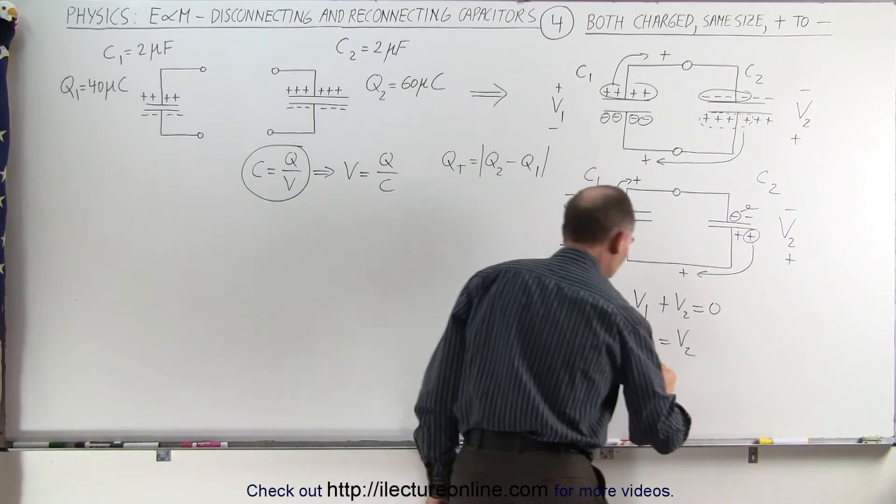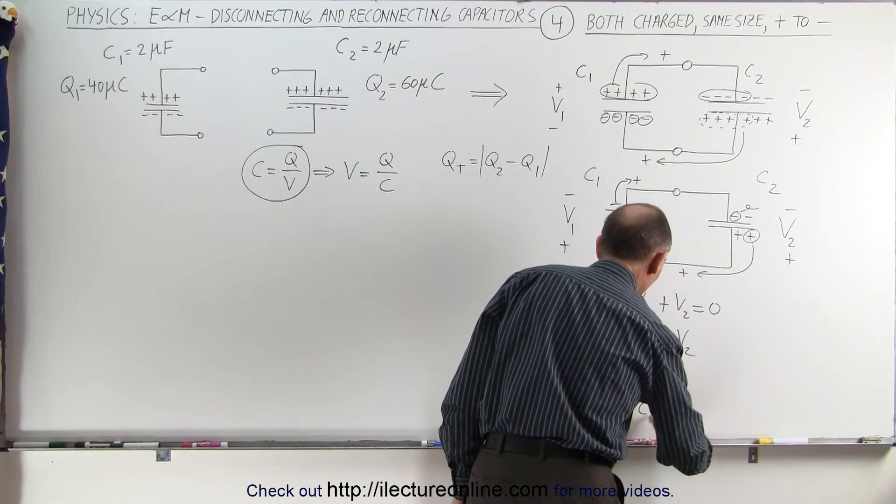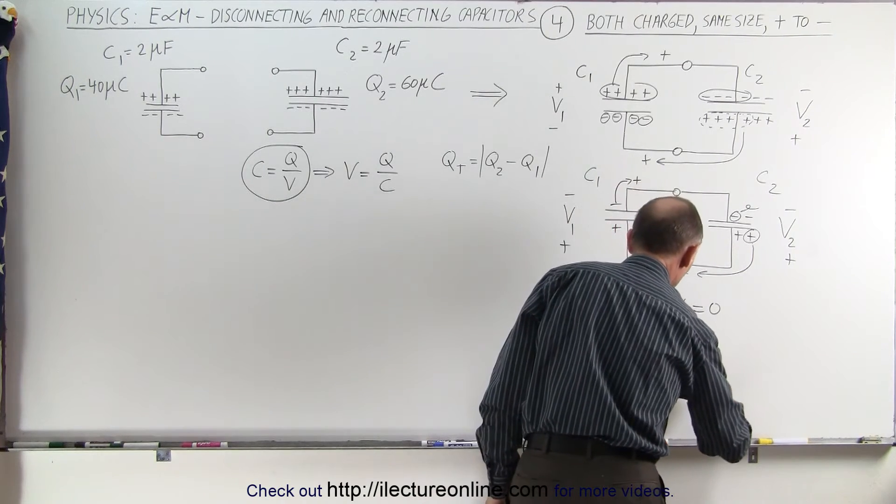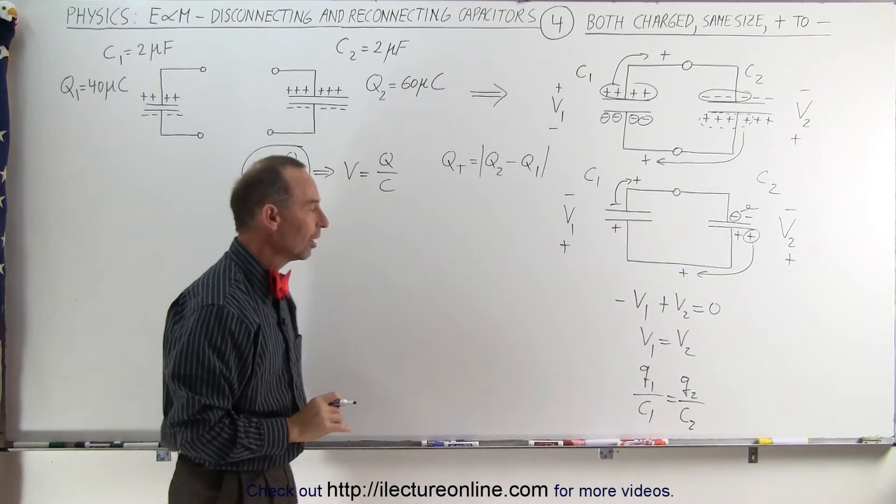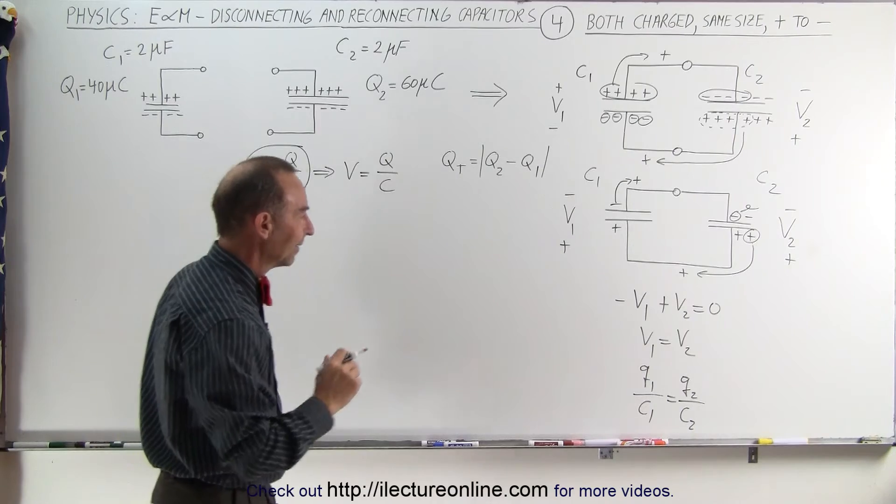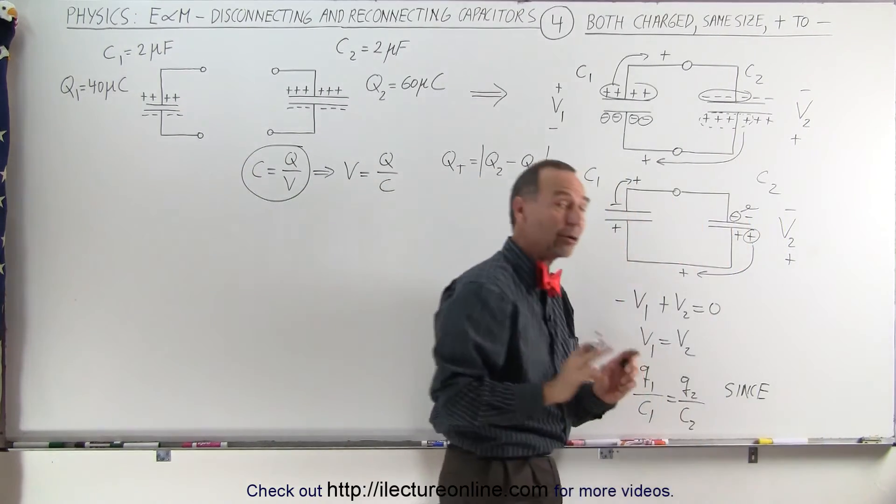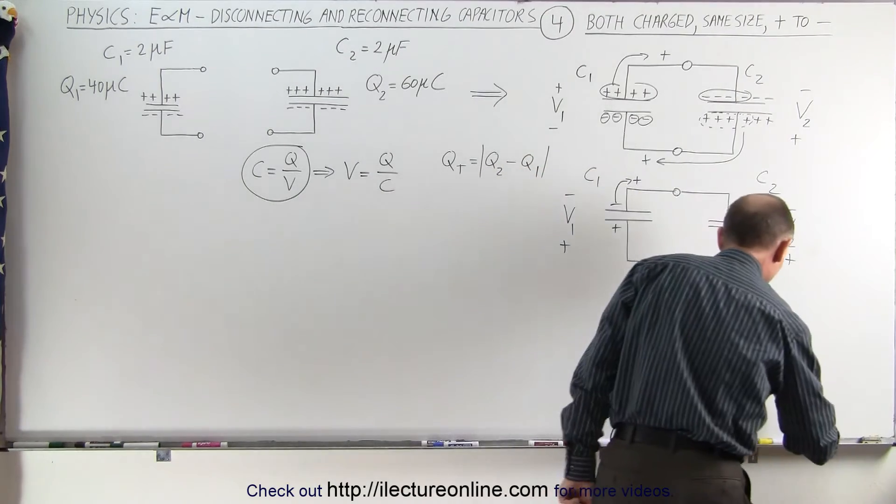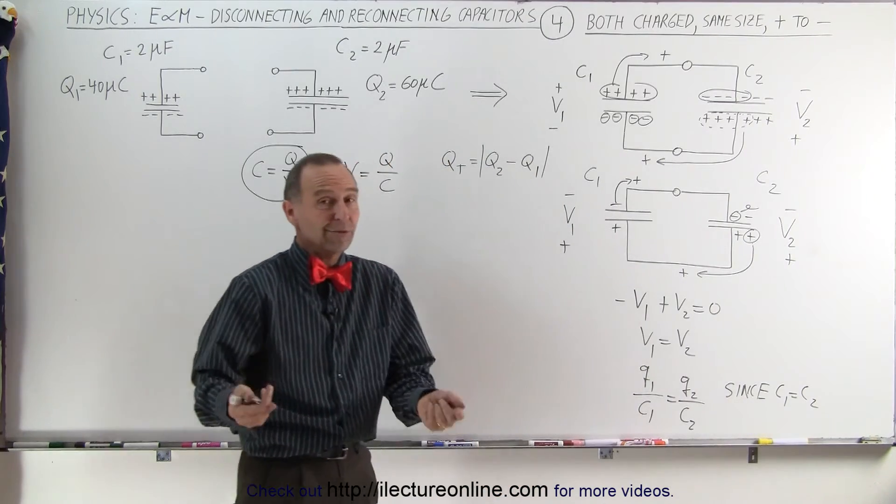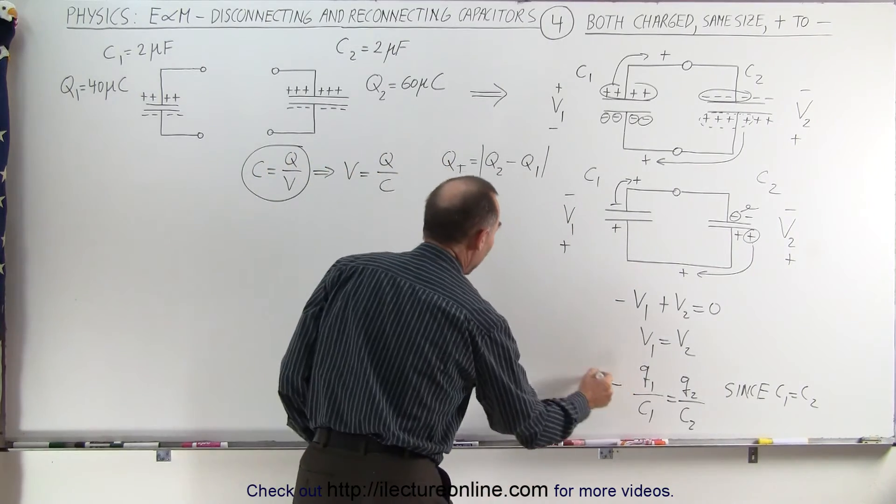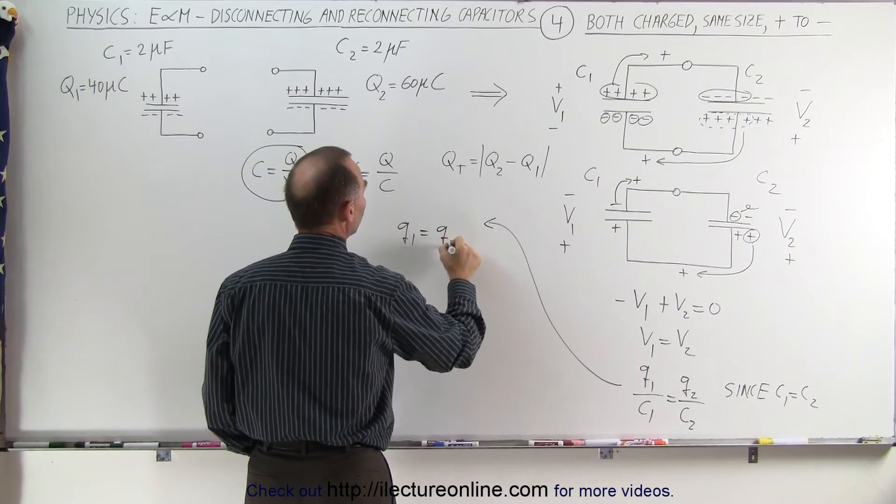That means that Q1, the final charge on capacitor one divided by C1, must equal Q2 divided by C2, where Q2 represents the final charge on capacitor two. Since C1 equals C2, we can get rid of the C1s and C2s because we're dividing by the same number.